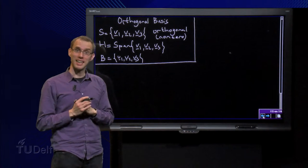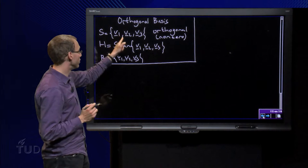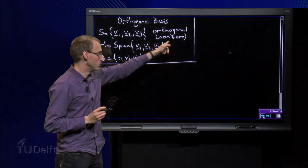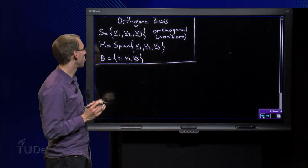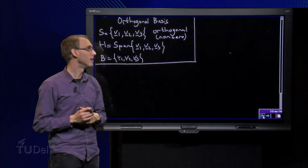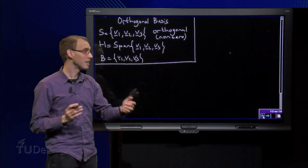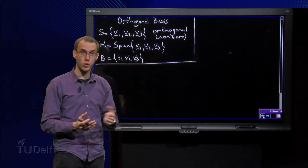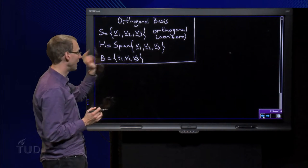Suppose we have a set S containing v1, v2 and v3, which is an orthogonal set with non-zero vectors. We set H to be the span of v1, v2 and v3, and then we know automatically that the basis B equals v1, v2, v3 is an orthogonal basis for H.